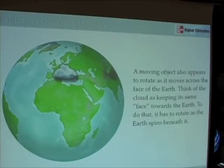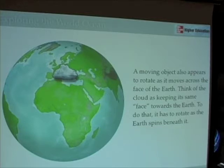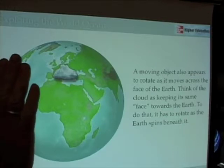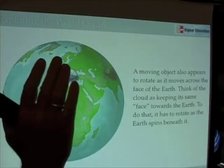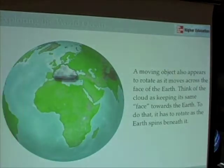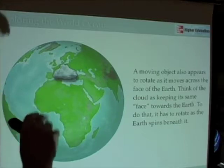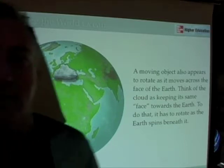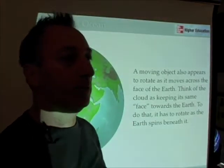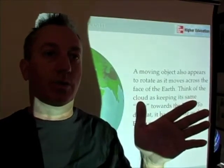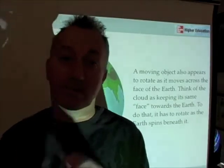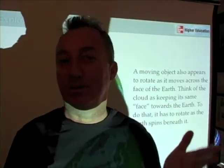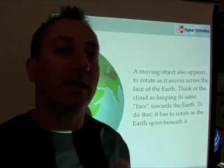In addition to the tangential speed component — where objects at the equator move faster to the east than objects at higher latitudes — we also have the rotational component. If you think about a cloud moving across the face of the earth with the earth turning underneath it, the cloud also has to rotate to keep its face toward the earth. I told you it got complex. If it's getting to be too much you can fast forward, but if you want to get into the details, this is how to do it.